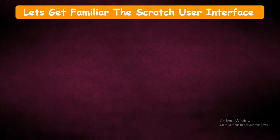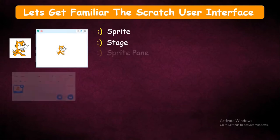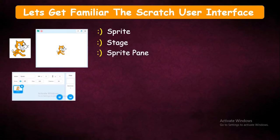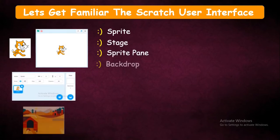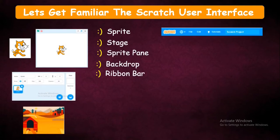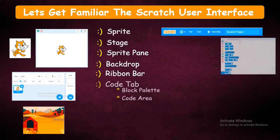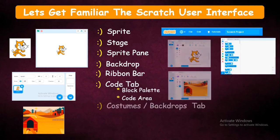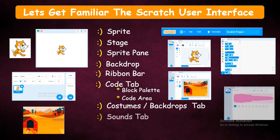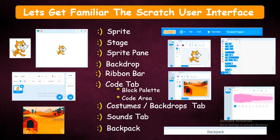Now let's get familiar with the Scratch User Interface. In this video, we are going to learn about the Sprite, Stage, Sprite Pan, Backdrop, Ribbon Bar, Code Tab — which includes Block Palette and Code Area — Costumes or Backdrops Tab, Sounds Tab, and Backpack.